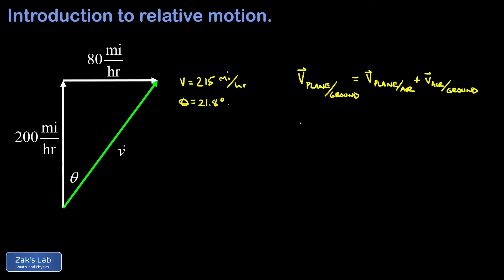To generalize this, I can use 'o' to stand for the object — whatever object we're watching move within one of these reference frames — 'a' for the first reference frame, and 'b' for the second reference frame. Our general formula for adding relative velocities is: the velocity of the object with respect to reference frame b